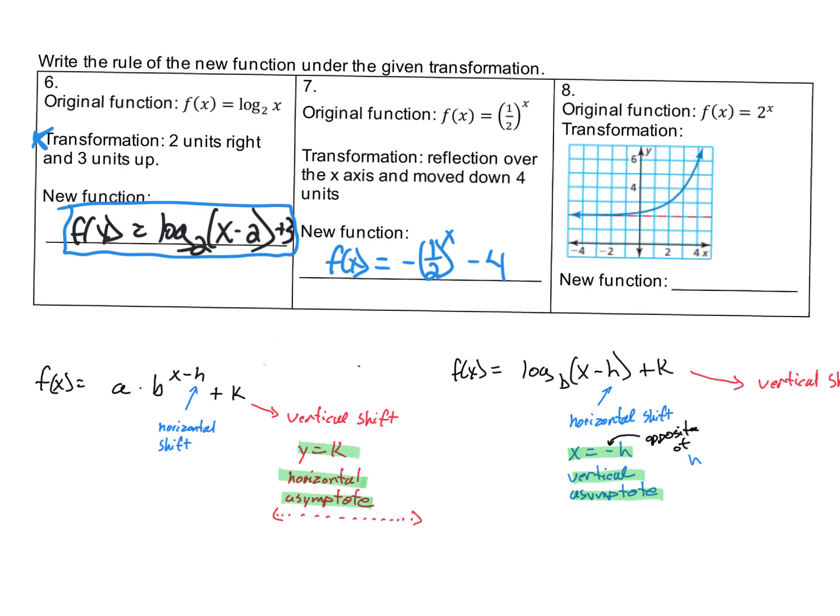For the parent function, the horizontal asymptote is y = 0, and it always goes through the point (0, 1), because anything to the zero power equals 1. This is what our parent function would look like.